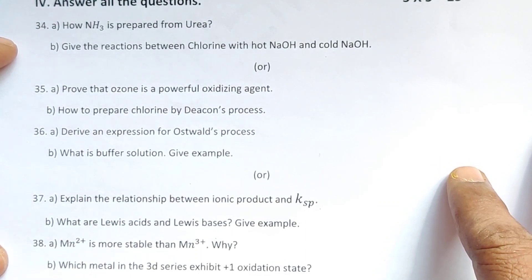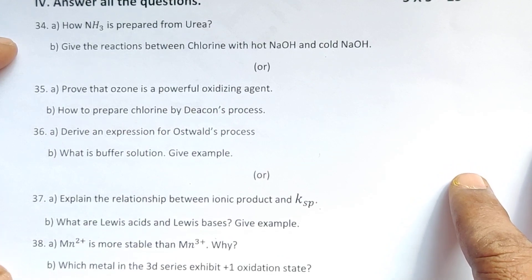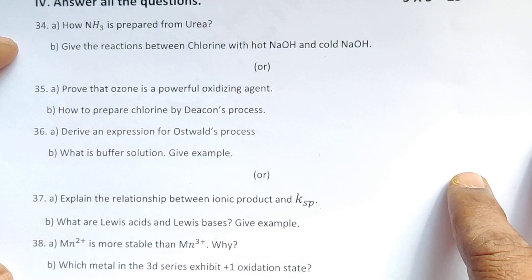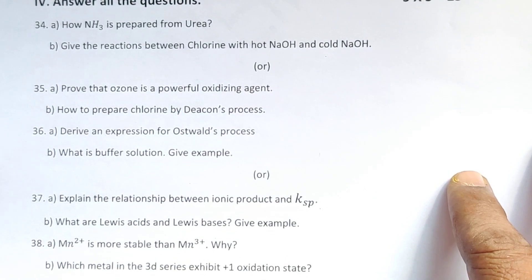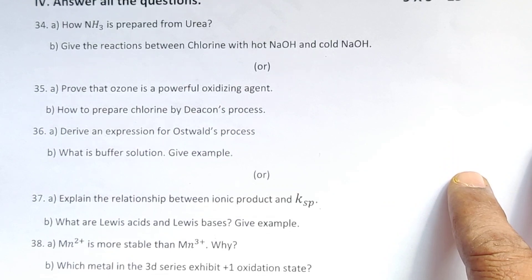Thirty-five, prove that ozone is a powerful oxidizing agent. B: How to prepare chlorine by Deacon's process? Thirty-sixth question. Derive an expression for Ostwald's process. Then, what is buffer solution? Give example.